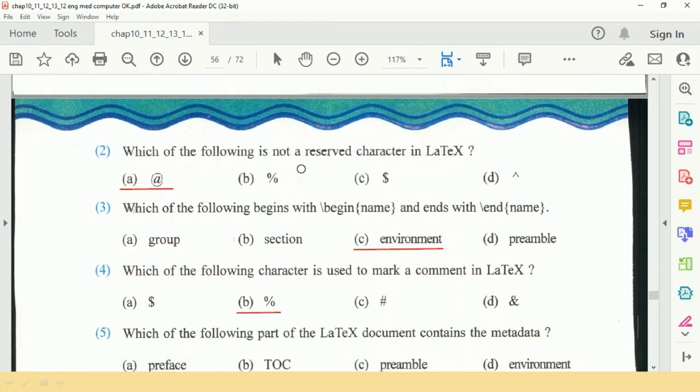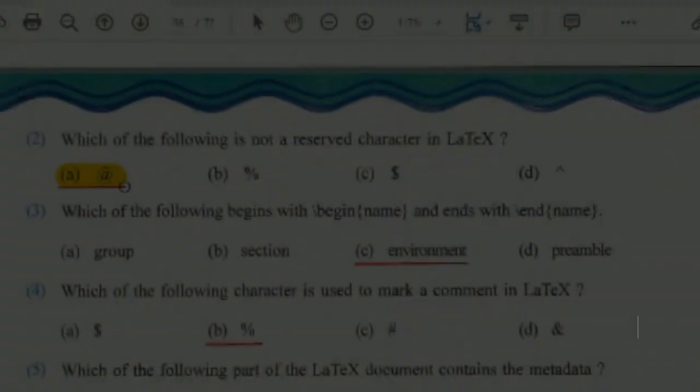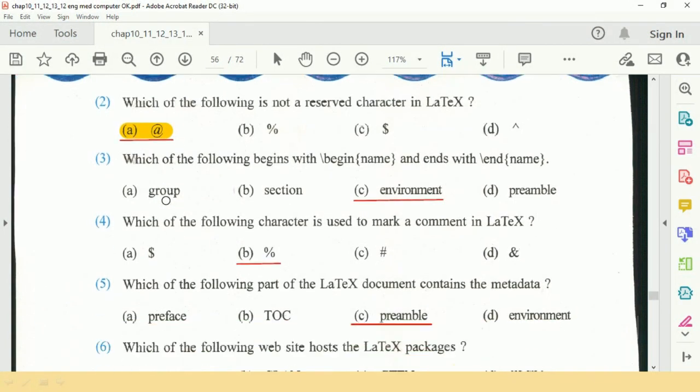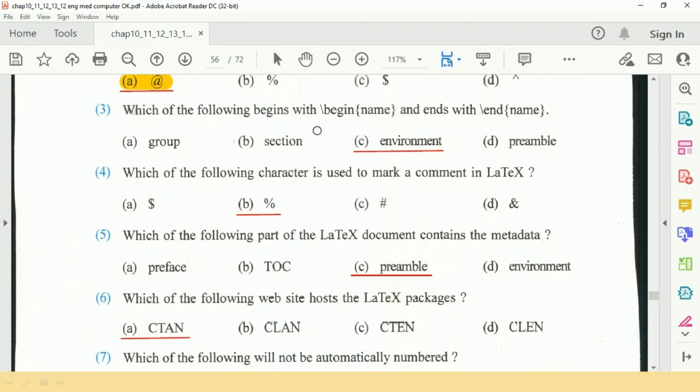C option. Question number 2 is: Which of the following is not a reserved character in LaTeX? So answer is A, at the rate. Next question is: Which of the following begins with slash begin name and